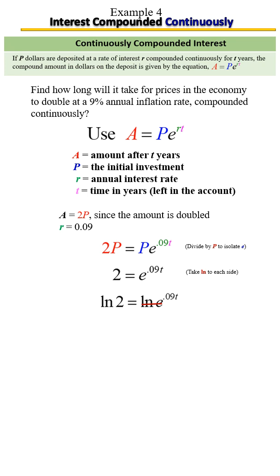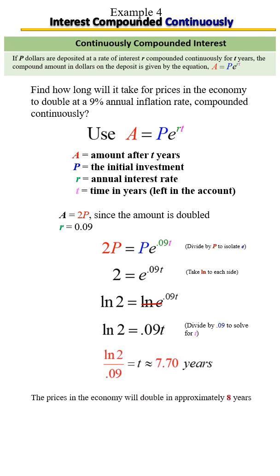We're going to bring down what's left, and there's one last step to solving for t. We're going to divide by 0.09. Whatever you do to one side, you do to the other. You're going to take your scientific calculator and do ln 2 divided by 0.09, and it is approximately, when you round it, about eight years. So the prices in the economy will double in approximately eight years.